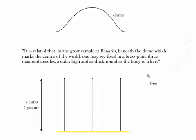Here we see an illustration of a dome, and beneath it a brass plate with three one cubit long diamond needles inserted into it. There's also a bee giving you scale since these needles are, if you read the description here, supposed to be the width of a bee's body.